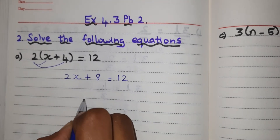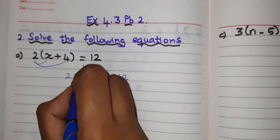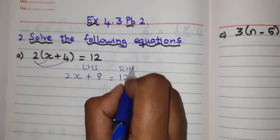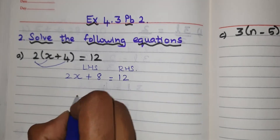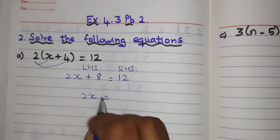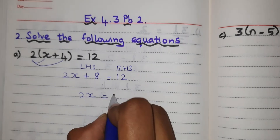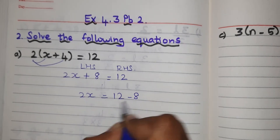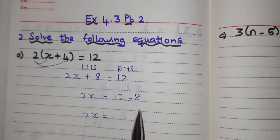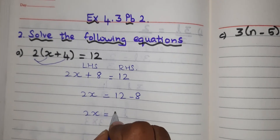Using the transposing method, I have to shift. This is the LHS side, this is the RHS side. Keep 2x, then 8 goes to the RHS side — it will become minus 8. So 12 minus 8. What is 12 minus 8? It is 4.